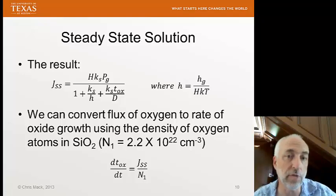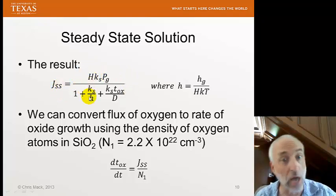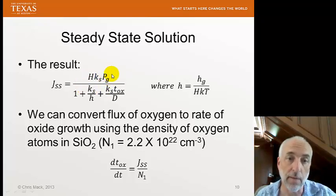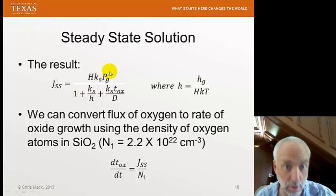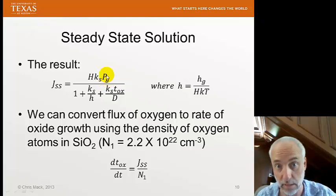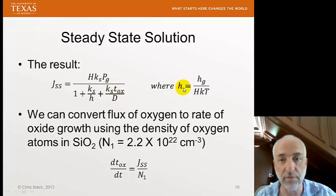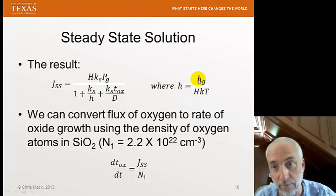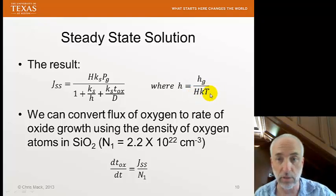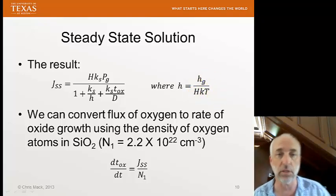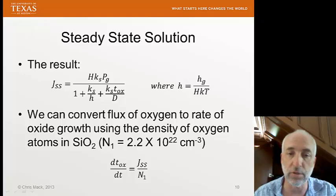The result gives us the steady-state flux as a function of various constants: Henry's gas law constant, the reaction rate constant K-sub-s, the partial pressure of the reactant in the gas phase P-sub-g, and the oxide thickness. An effective mass transfer coefficient H is defined as H-sub-G divided by hkT, which has temperature built in — as most rate constants are functions of temperature.